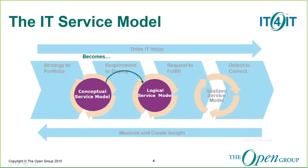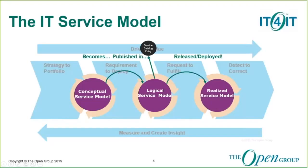That model becomes logical in nature when it is built or sourced externally. These are development and integration model elements, such as system design, source, build, and deployment checklist. It then can be released, published as a service that can be subscribed, or deployed directly into a run status, which is the realized service model. Finally, it can be ordered through a catalog subscription process.